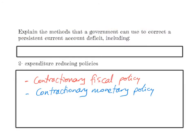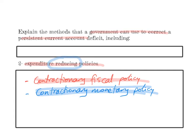The other set of policies are called expenditure reducing policies. These are policies designed to reduce overall expenditure and aggregate demand, in hope that this would also reduce domestic demand for imports. This can be done by applying a contractionary fiscal policy — raising taxes and lowering government expenditure — or a contractionary monetary policy where the government raises interest rates to make it more difficult for consumers and businesses to borrow, in hope that this would limit the demand for imports.